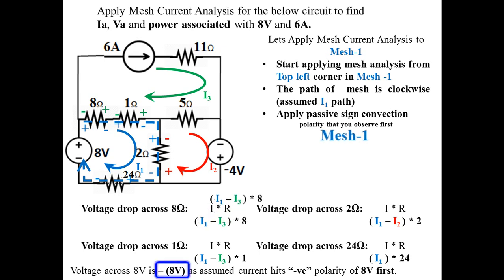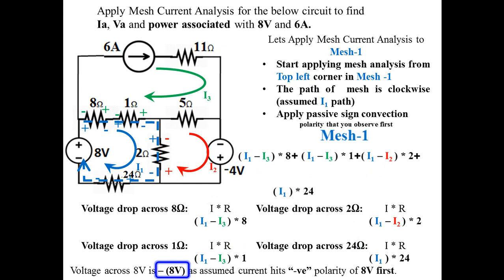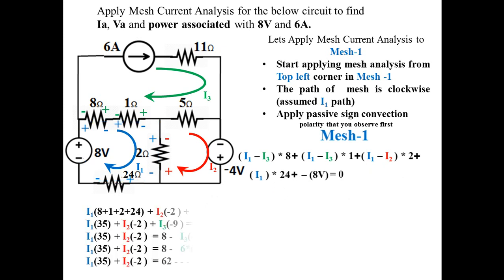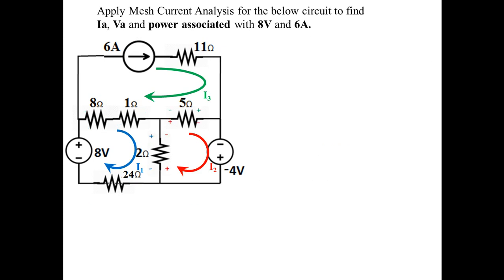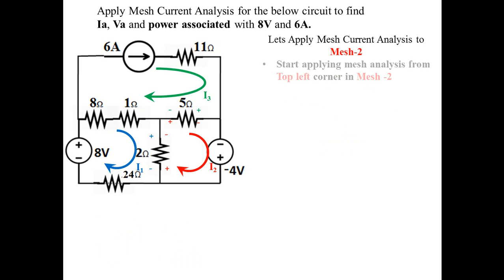Adding all sub-equations for mesh 1: (I1 - I3)×8 + (I1 - I3)×1 + (I1 - I2)×2 + I1×24 - 8 = 0. Substituting I3 = 6, we obtain Equation 1: 35·I1 - 2·I2 = 62.